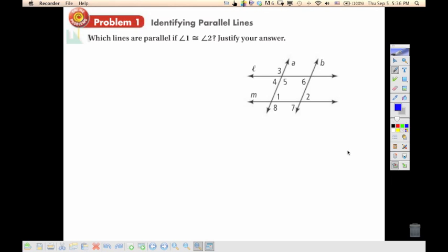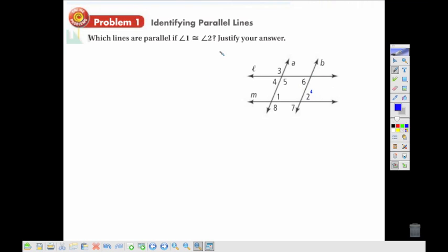Here's an example that will show us how we might use this. Which lines are parallel if angle 1 is congruent to angle 2? Notice we don't know that any of these lines are parallel yet. Since none are marked as parallel, we can't make that assumption. All we have to go on is that angle 1, let's mark that, is congruent to angle 2.